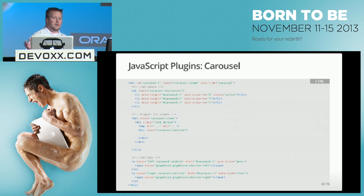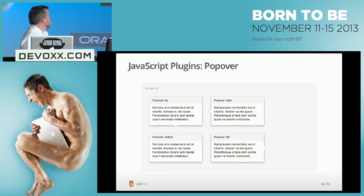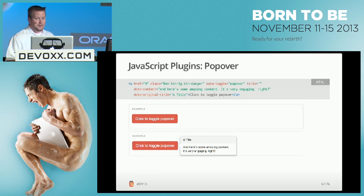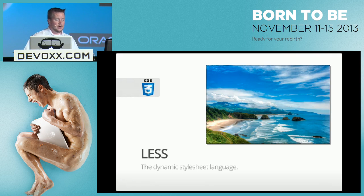There's a carousel component if you want to slide different content or images as a slideshow. The key class is carousel. You can add Apple-style indicators, show content, and add left and right controls. For popovers, you can click on a link and show information on the top, right, bottom, or left. You can click on a button to have it show up — again, no JavaScript required except for the reference to the JavaScript file.